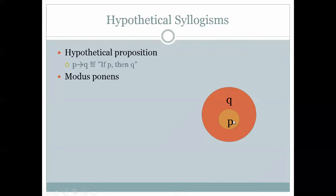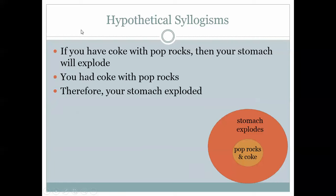If P then Q, and we know P — what can you conclude? You can conclude Q. For example: 'If you have Coke with Pop Rocks, then your stomach will explode.' If you had Coke with Pop Rocks, therefore your stomach will explode. This is a valid inference — if P then Q, P, therefore Q.